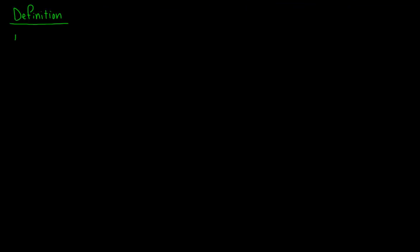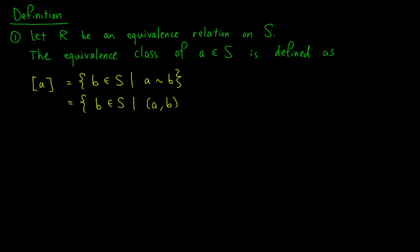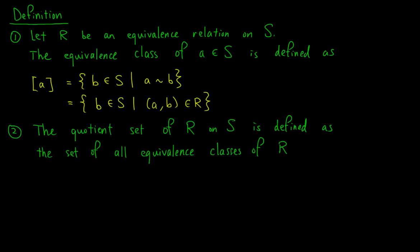Let's give two more definitions. Let R be an equivalence relation on S. The equivalence class of an element A in S is defined as [A], which equals the set of elements B in S such that A is related to B — equivalently, such that the ordered pair (A, B) is an element of R. We also define the quotient set of R on S, written S/R, as the set of all equivalence classes of R; in other words, S/R is the set {[A] : A ∈ S}.